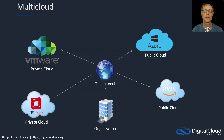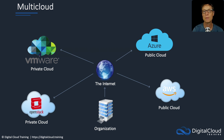Lastly, we have multi-cloud, where you're literally using a combination of cloud services. An organization might connect over the internet — or via a private link — and use services from Azure, AWS, and private clouds from VMware and OpenStack as well. This is all about catering for specific use cases: some applications may be better suited to Azure or AWS, while others might run better or offer better cost or performance in a private cloud scenario.